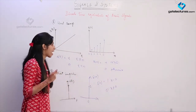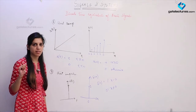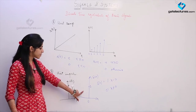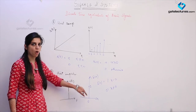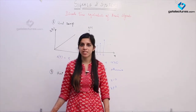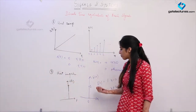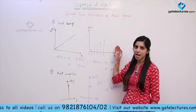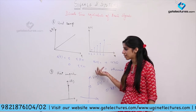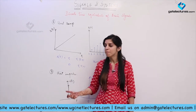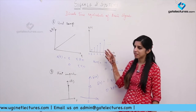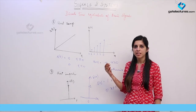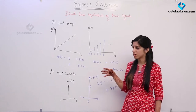All three signals — ramp, step, and impulse — can be expressed as derivatives and integrals of each other in continuous time. Similarly, in discrete time, integration is replaced by summation and differentiation is replaced by differencing. So we can express these discrete time signals as differences or summations of each other.